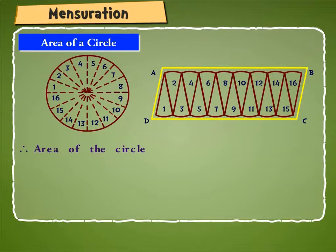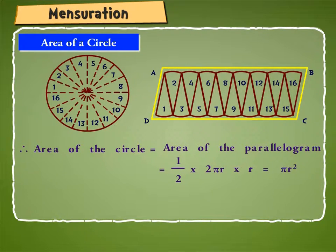Therefore, area of the circle is equal to area of the parallelogram which is equal to base into height is equal to 1/2 into circumference of the circle into radius is equal to 1/2 into 2πr into r is equal to πr². Hence, area of the circle is equal to πr².